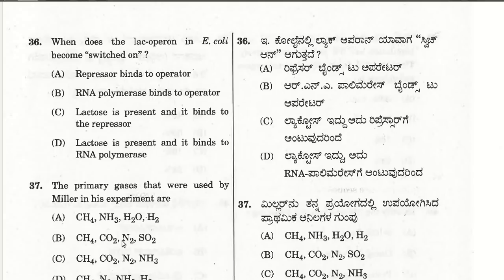The thirty-sixth question: when does the lac operon in E. coli become switched on? The lac operon is switched on when lactose is present and it binds to the repressor. So the third choice is the answer for question 36.